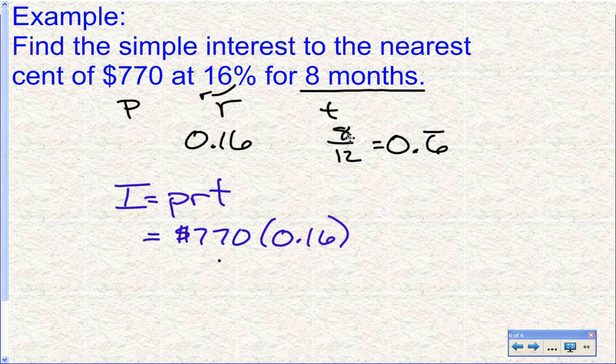So my principal is $770. My rate is 0.16. And here's the trick I'm going to do. I'm going to plug in, instead of trying to plug in 0.66666 in here, I'm going to plug in the 8 divided by 12. I can just divide the whole thing by 12 here. It'll give me the same answer. So I took this 8 divided by 12, and I plugged it in 8 on top, 12 on the bottom.